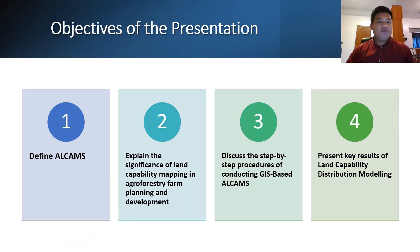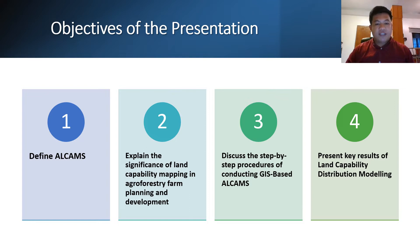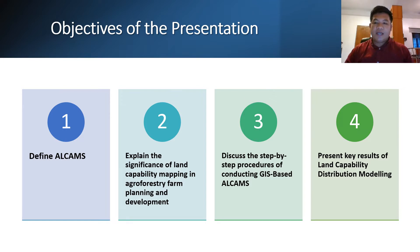Here are the objectives of my presentation. Number one is to define what is agroforestry land capability assessment and mapping scheme, or ALCAMS. Number two, explain the significance of land capability mapping in agroforestry farm planning and development. Number three is to discuss the step-by-step procedures of conducting GIS-based ALCAMS. And lastly, to present key results of land capability distribution modeling.